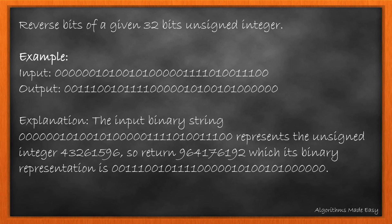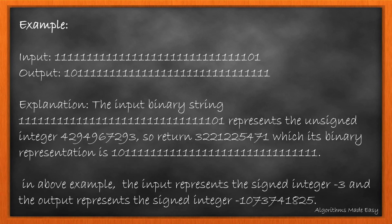We need to reverse the bits of a given 32-bit unsigned integer. For the given example, we can see that the output has bits in a reversed order. Similarly for this one. However, its most significant bit is 1, and the integer conversion of this would be a signed integer minus 3. Thus, we need to be careful while reversing the bits as we need to perform the operation on an unsigned integer.